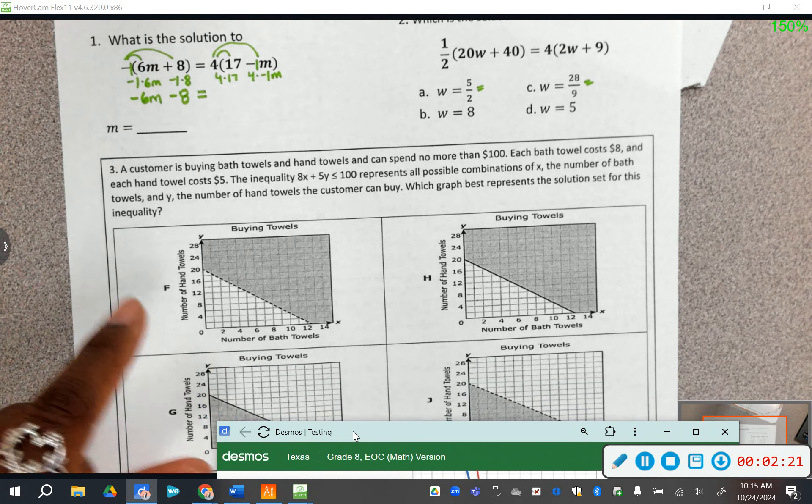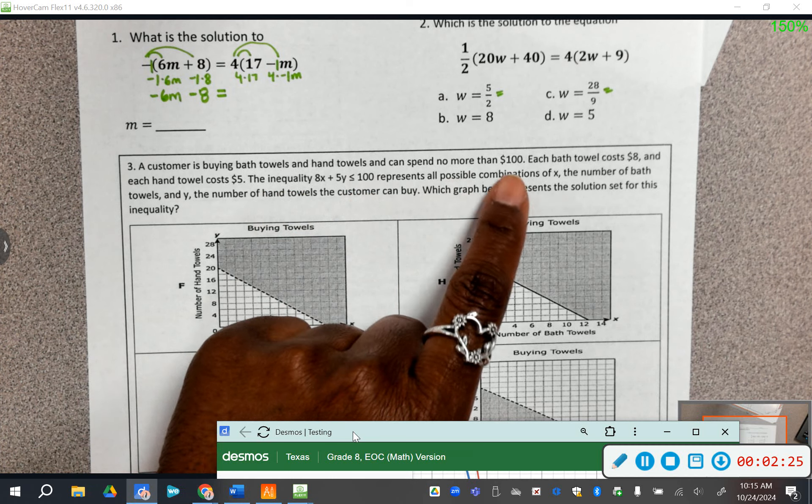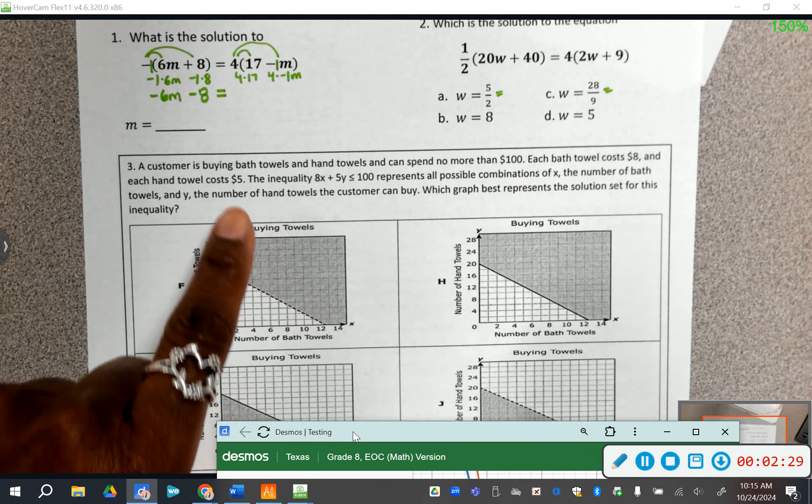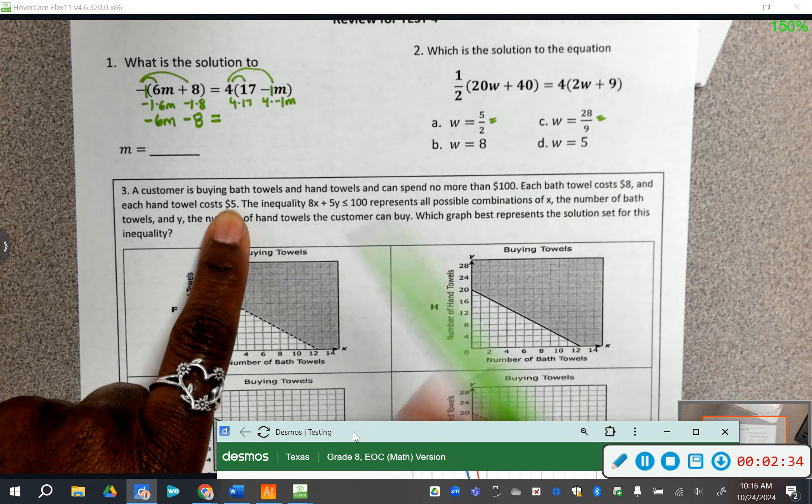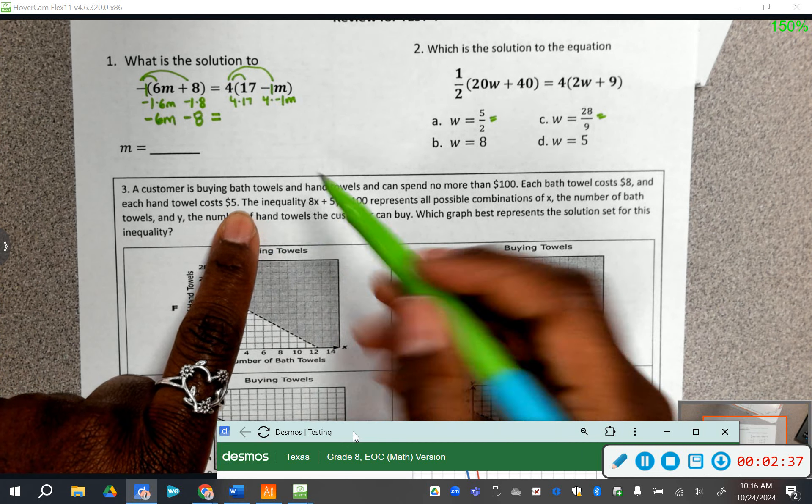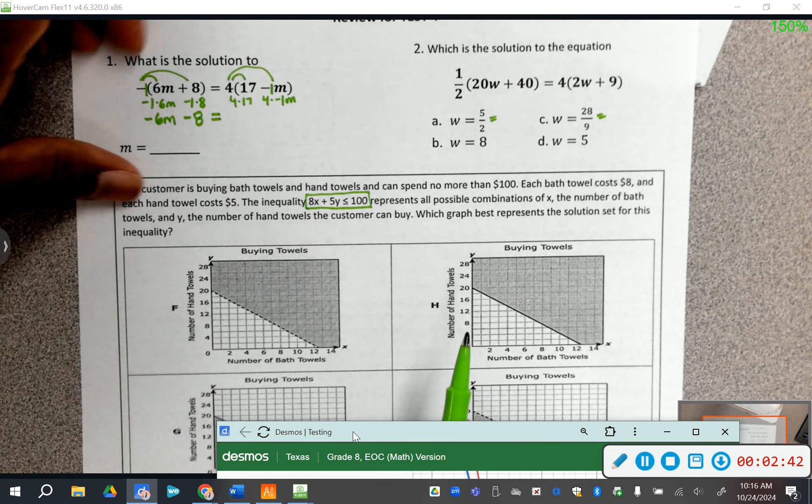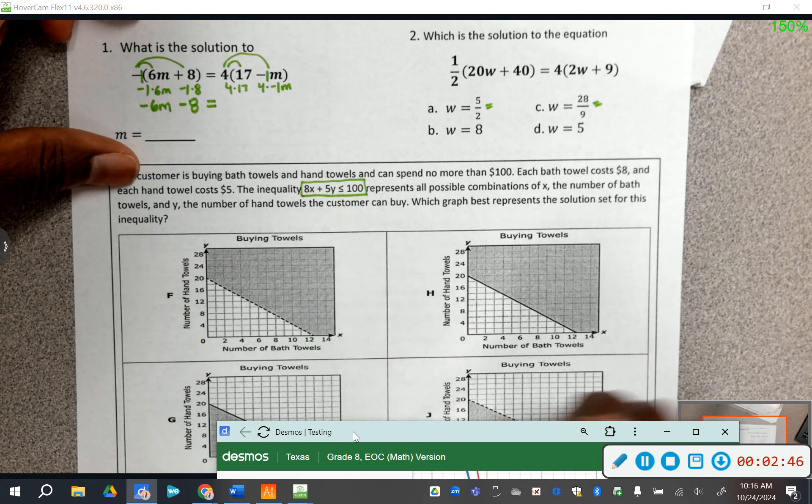Now let's look at number three. A customer is buying bath tiles and hand tiles and can spend no more than 100. Each bath tile costs 8, and each hand tile costs 5. We did one like this in yesterday's notes. Oh, look! The inequality! They give us the inequality. We didn't even have to write it.